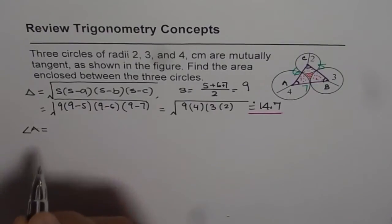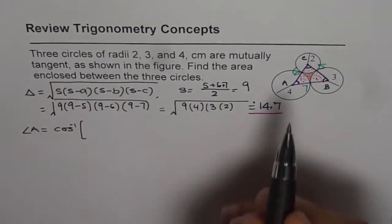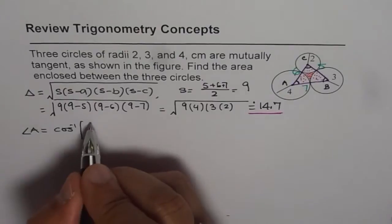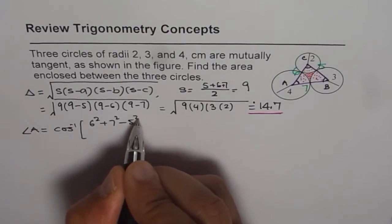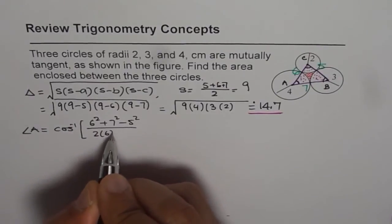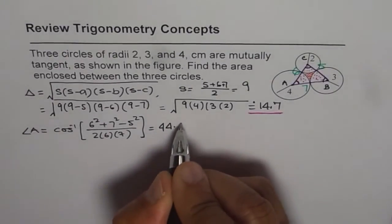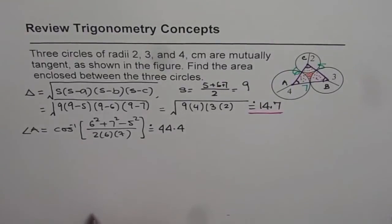So angle A is equals to cos inverse of, you remember the way, these two side squares will be added and take away 5. So it is 6 square plus 7 square minus 5 square divided by 2 times 6 times 7. That is equal to 44.41, so we can write 44.4. Let's do all the values to one decimal place.